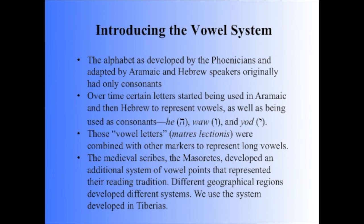Those Masoretes, the medieval scribes, developed an additional system of vowel points that represented their reading tradition. Different geographical regions developed different systems. We use the system developed in Tiberias, or the Tiberian system.